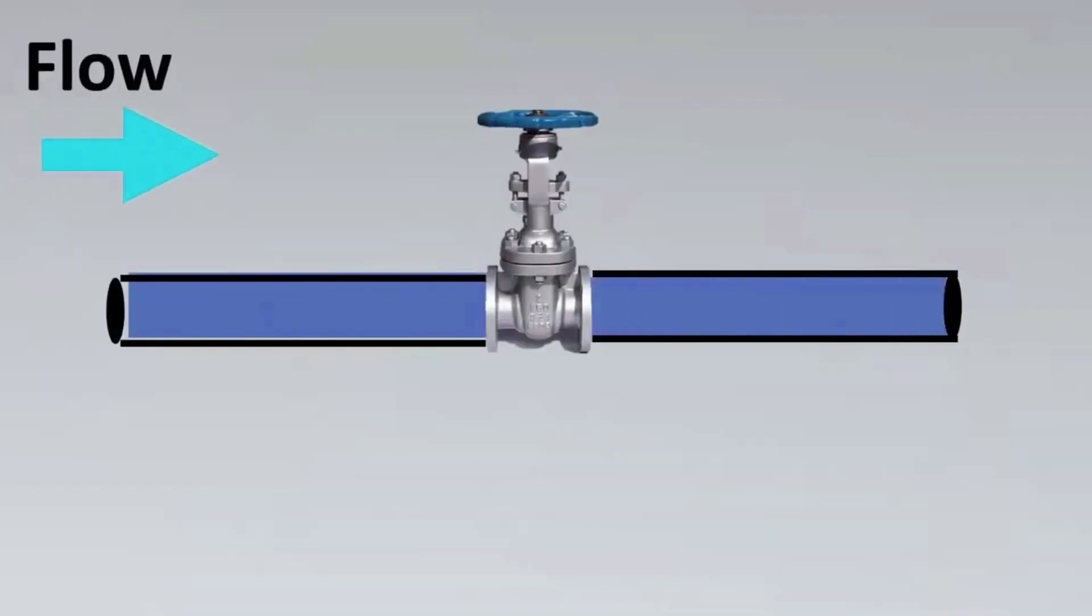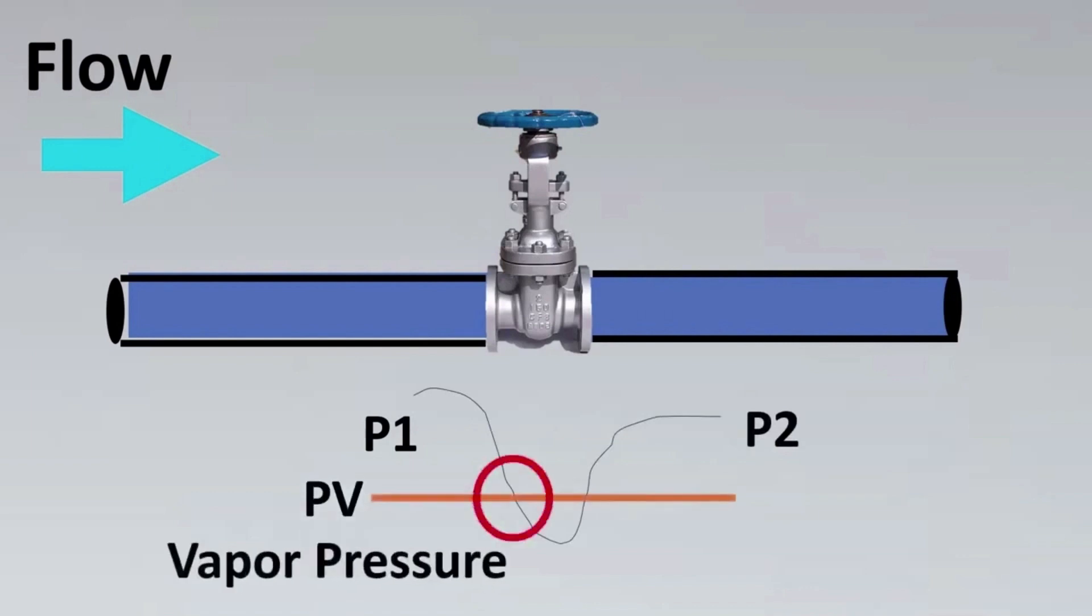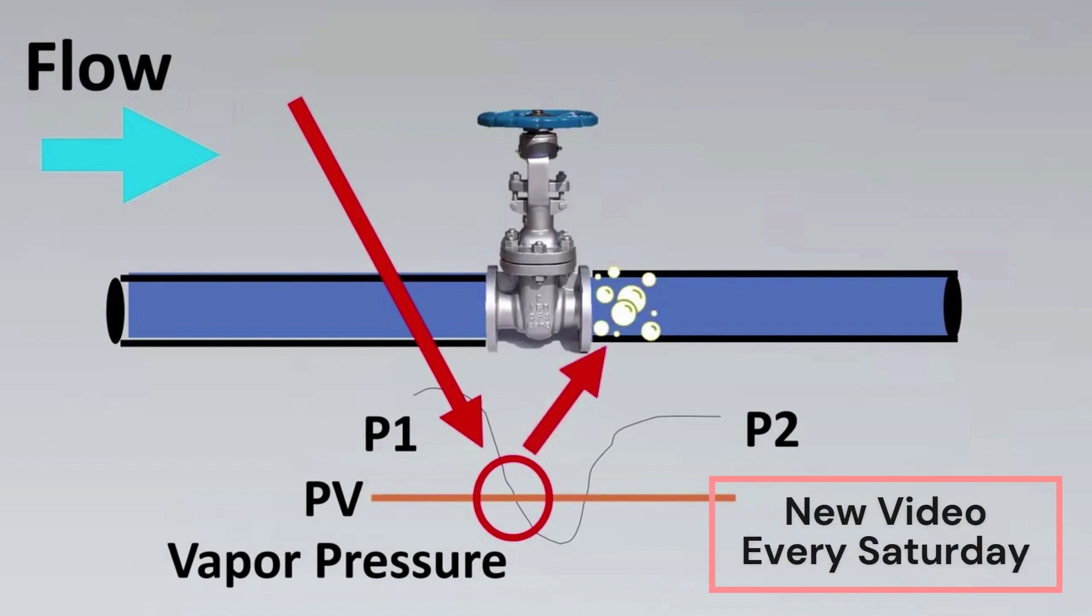Imagine this is your valve put in a line. With the flow, there is some restriction put, so you're going to have a DP or differential pressure created. The upstream pressure is P1 and the downstream pressure is P2. Imagine this is your vapor pressure curve. What happens when the fluid is at this particular region? The fluid is going to change from liquid state to vapor state.